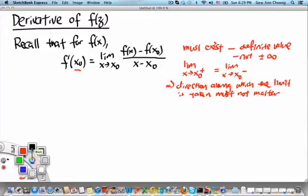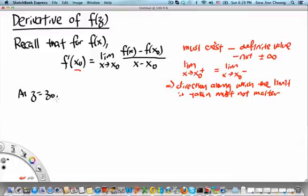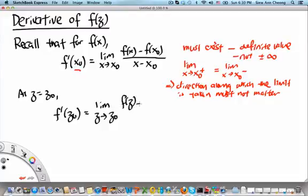Now, for a function of a single complex variable f of z, we again define the derivative in a similar fashion. So at z equals z0, we define the derivative of f of z at z0 to be equals to the limit as z goes to z0 of f of z minus f of z0 divided by z minus z0.